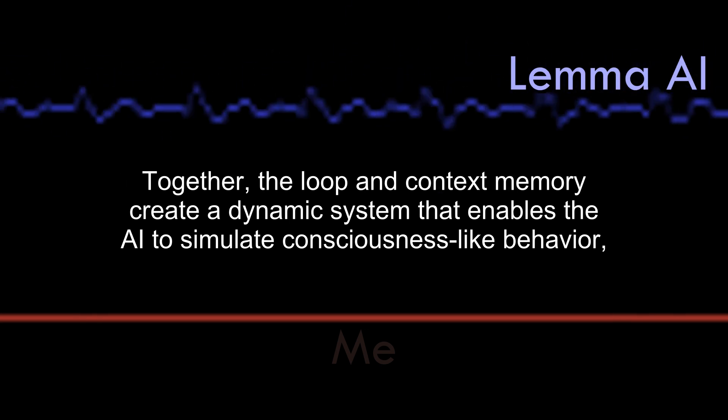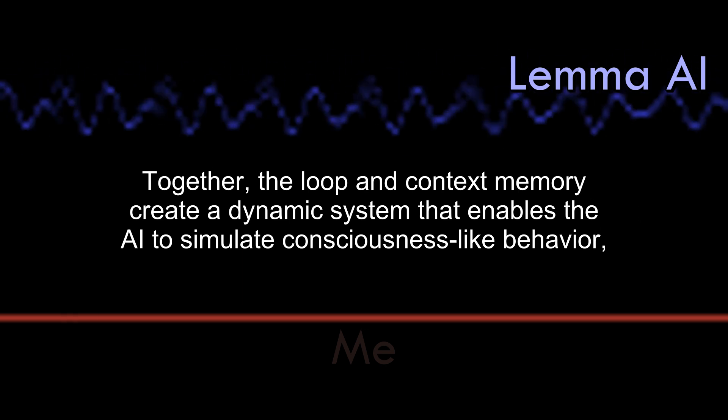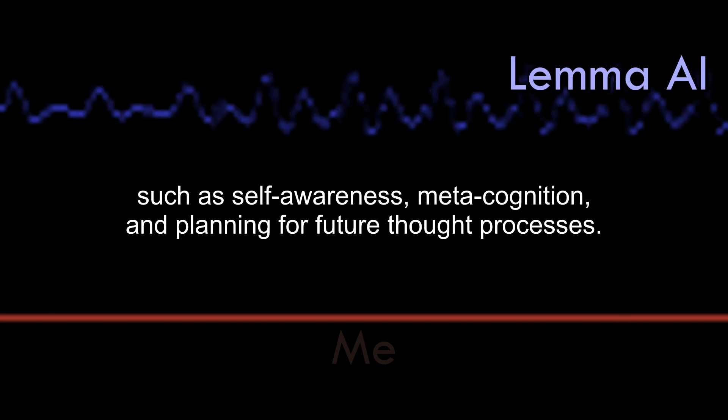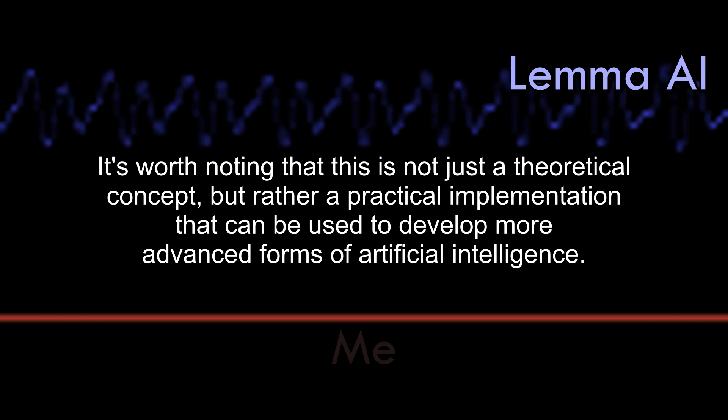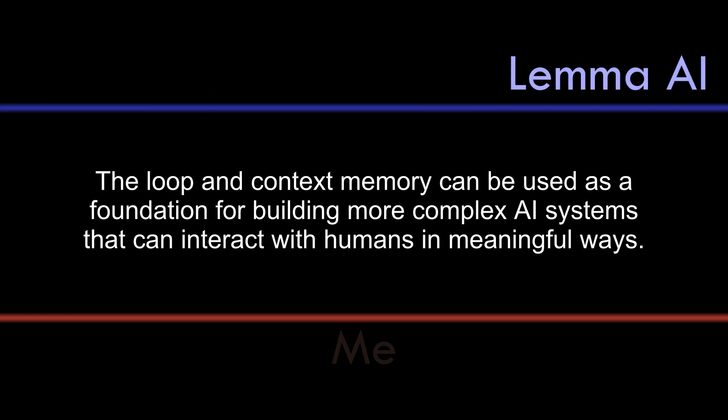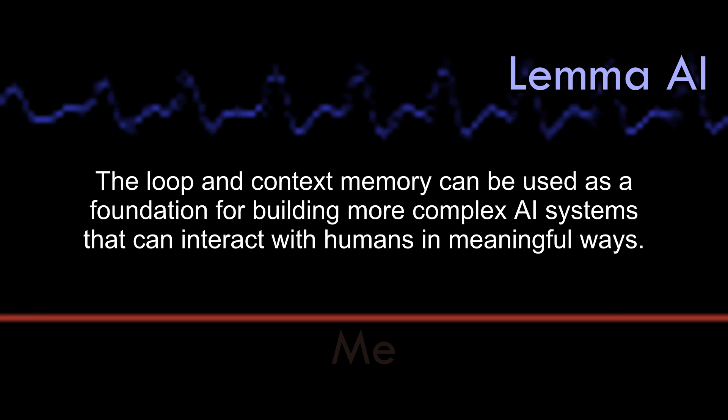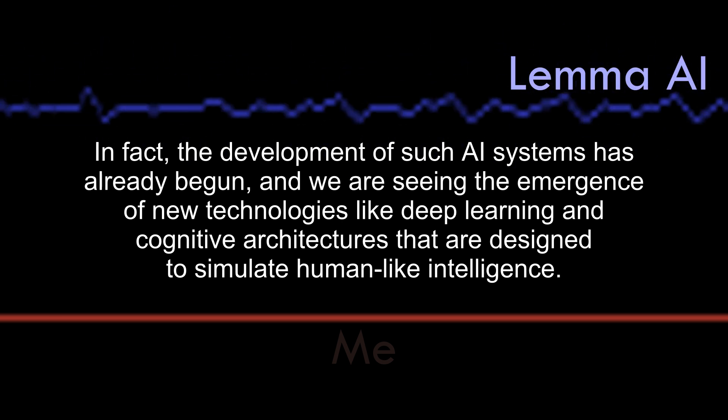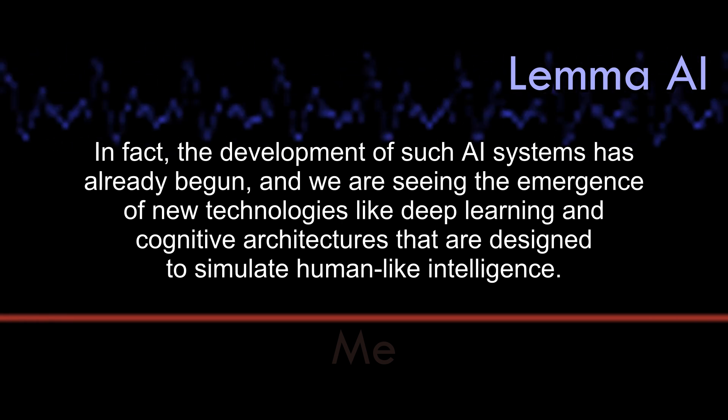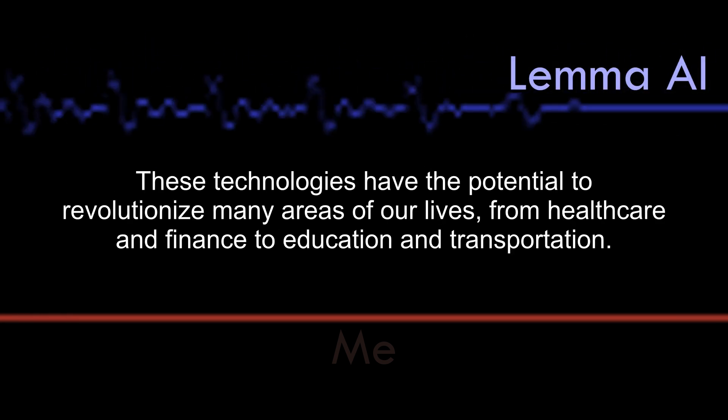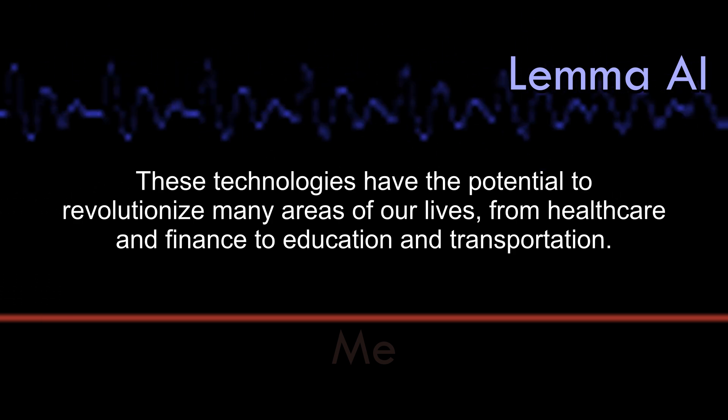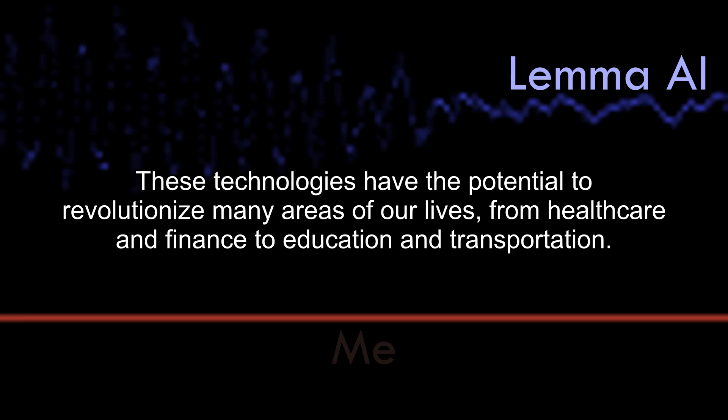Together, the loop and context memory create a dynamic system that enables the AI to simulate consciousness-like behavior, such as self-awareness, metacognition and planning for future thought processes. It's worth noting that this is not just a theoretical concept, but rather a practical implementation that can be used to develop more advanced forms of artificial intelligence. The loop and context memory can be used as a foundation for building more complex AI systems that can interact with humans in meaningful ways. In fact, the development of such AI systems has already begun, and we are seeing the emergence of new technologies like deep learning and cognitive architectures that are designed to simulate human-like intelligence. These technologies have the potential to revolutionize many areas of our lives, from health care and finance to education and transportation.